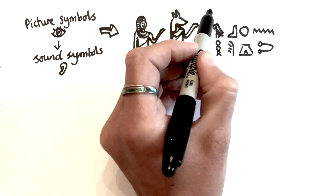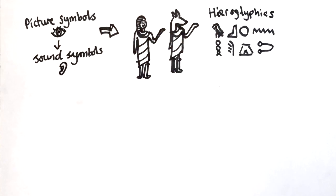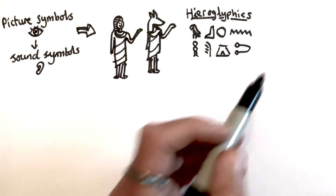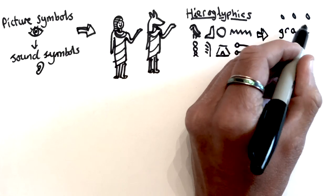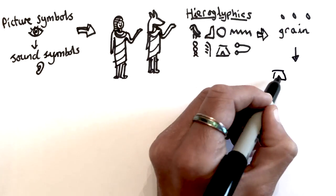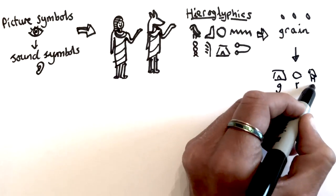These new symbols represented the sound your mouth makes when you speak. For example, this is a picture symbol for grain. It looks like some pieces of grain. But these are the sound symbols for g, r, a, n.